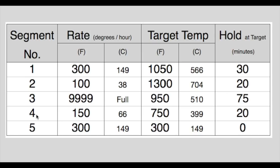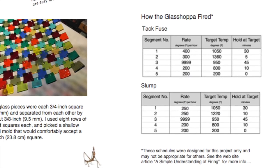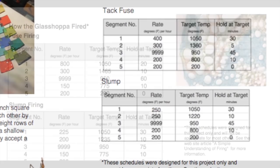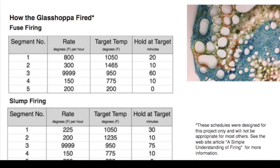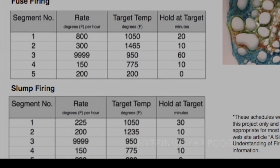And so on until segment number 5 is complete and the kiln switches off. Firing schedules vary from project to project. Use the schedule that accompanies the project you're making. It's a good idea to have your firing schedule written down in front of you when you go to enter it into the controller.